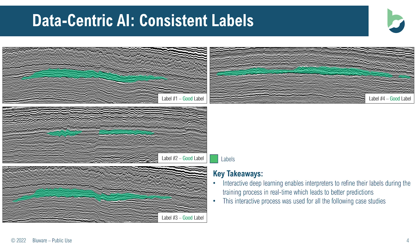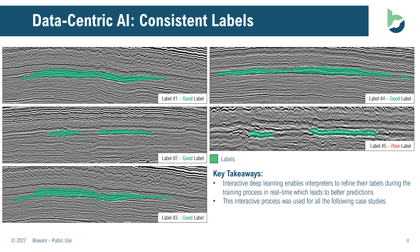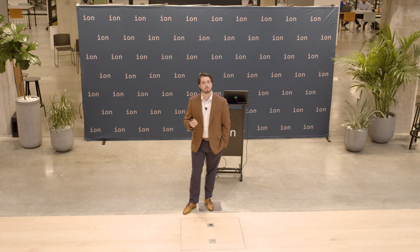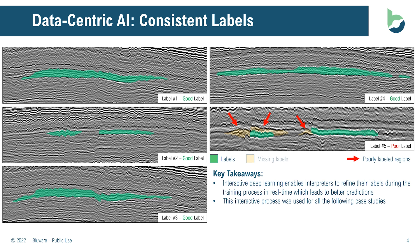This is the exact same approach we're taking in the seismic domain. Here I have several interpretations — specifically labels — for a reservoir, shown in green. But if we look at the fifth label, in some areas we've actually missed part of that reservoir extent. So we have some misleading or incorrect labels. If we feed this into the algorithm, we're going to get some poor predictions. But what if you could use the inference prediction from the neural network to give you feedback on those labels in real time, and help you correct them — characterize the full extent of the reservoir? That's the concept of interactive AI.